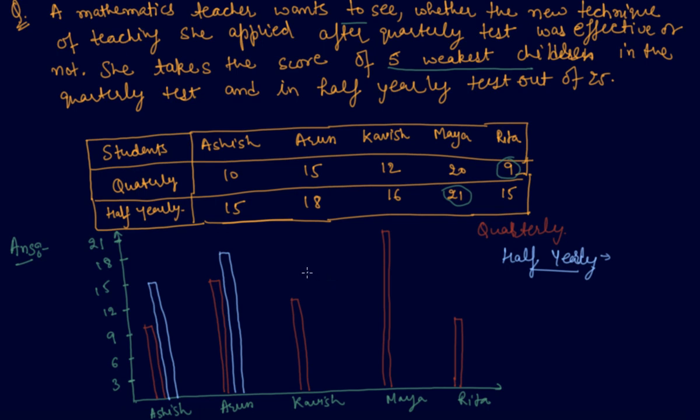And for Kavish, it should be 15. And for Maya, it should be 21. And for Rita, it should be 15.